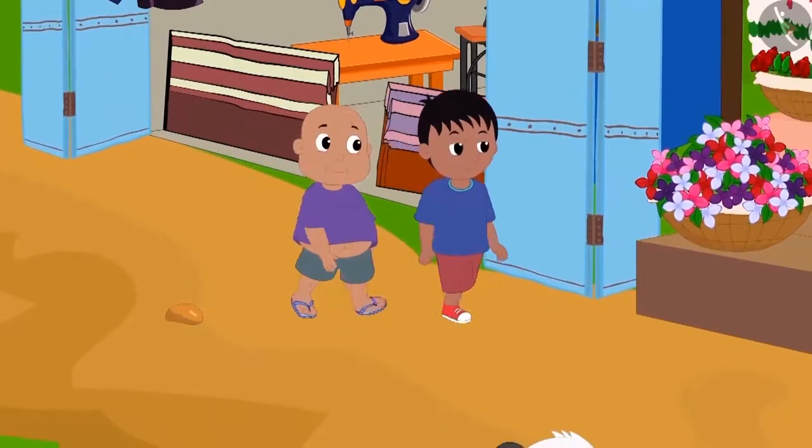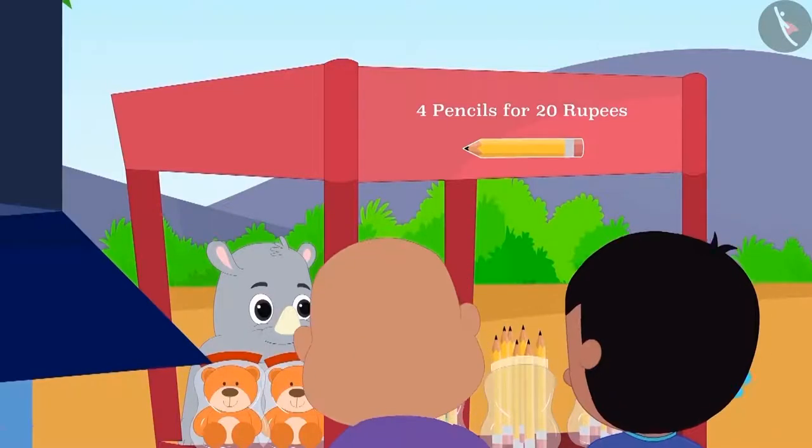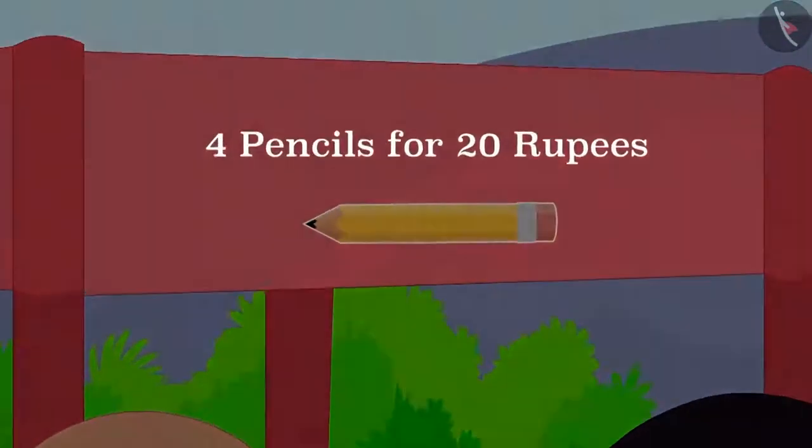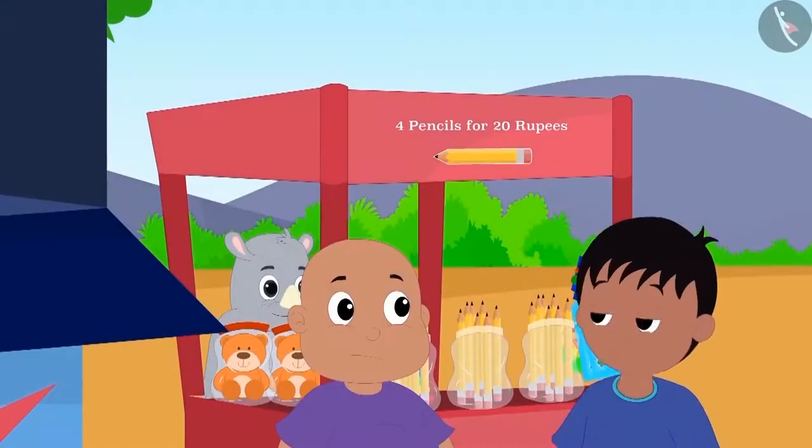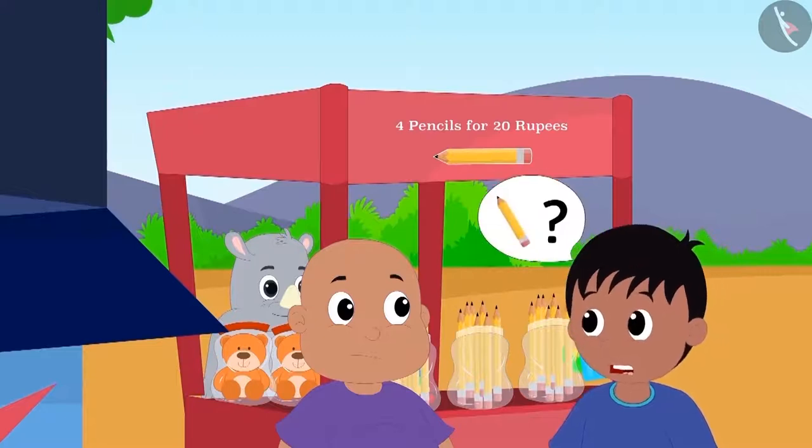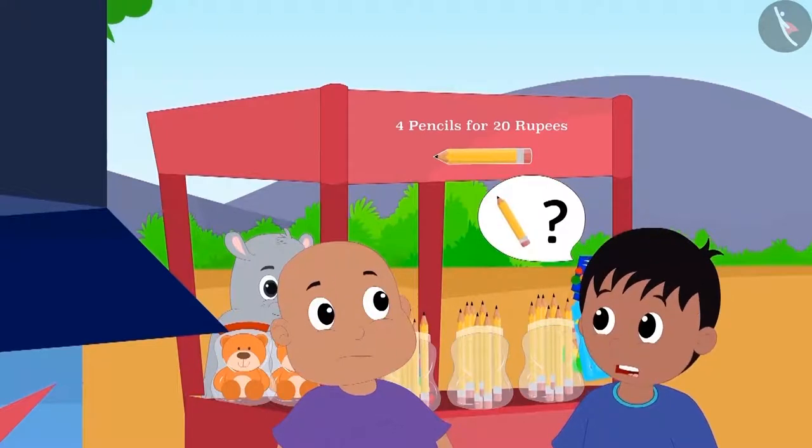Raju and Bablu are out in the market. Raju read what was written on Gagu's shop front: four pencils for 20 rupees. He asked Bablu, how much would they have to pay if they wanted to buy one pencil?